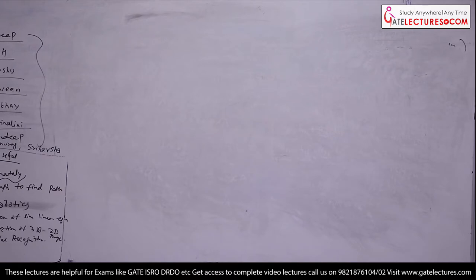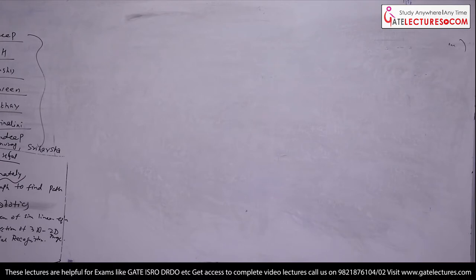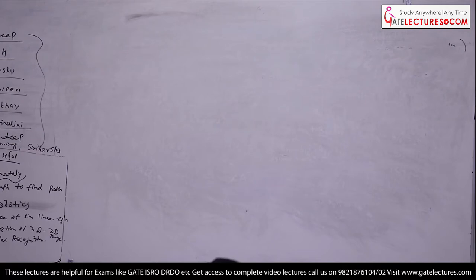Practice question: matrix A is 2×3 with rows 2 4 1 and 2 4 1. Matrix B is 3×3 with rows 1 2, then 1 0 0 3, then 1 0 4. Find C which is equal to A times B. First you need to check whether multiplication is possible or not, then multiply if possible.